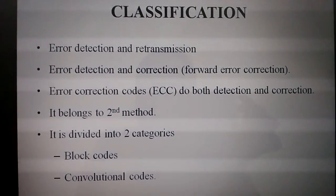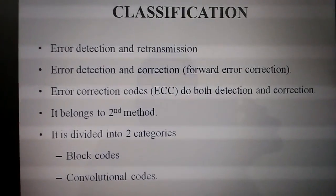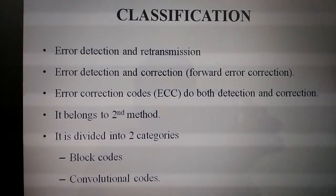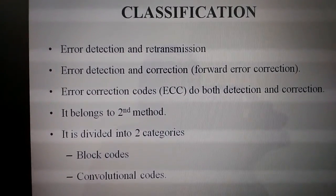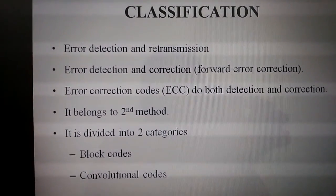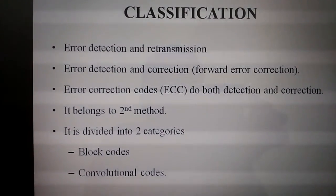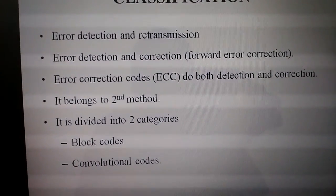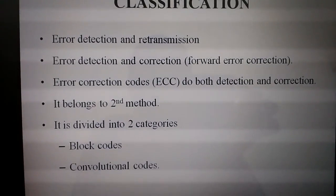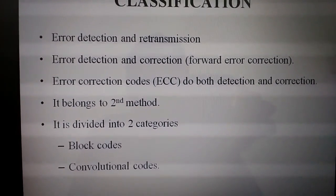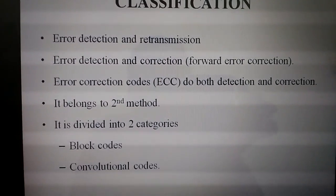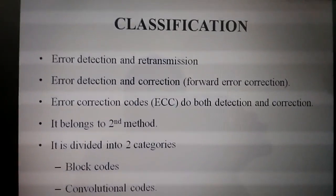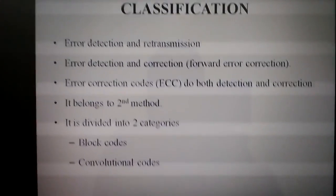Today's topic is linear block codes. We'll see how to solve problems in linear block codes. First, a brief introduction: there are two types of codes — error detection and retransmission, and error correction. Error correction codes do both detection and correction. These codes can be divided into block codes and convolutional codes, and under block codes you get linear block codes.